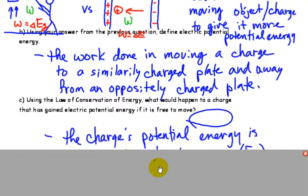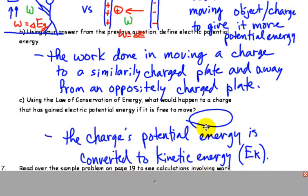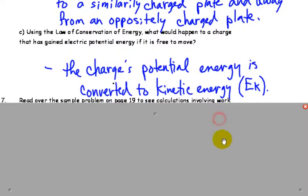Using the law of conservation of energy, what would happen to a charge that has gained potential energy if it was free to move? What would happen to the charge that has gained electric potential energy? The charge's potential energy is converted into kinetic. So, if we were to let that go, the charge would go flying over here and hit this plate. Just like here, this object, if I was to let go, it would go smashing down to the ground. So, the potential energy is converted into kinetic energy.